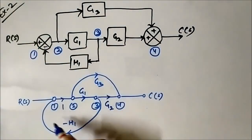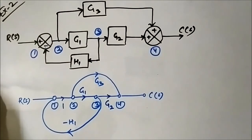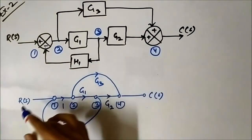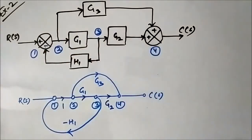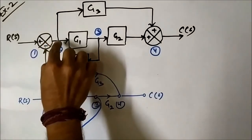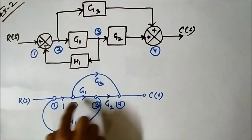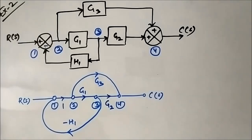This is the signal flow graph and this is the block diagram equivalent representation. Here we have discussed block diagram to signal flow graph conversion. I have deliberately taken this takeoff point immediately after the summing point, but taken them as separate nodes. I hope you liked this video — please subscribe to my channel Engineering Tutorial for more videos related to electrical, electronics, instrumentation, and communication engineering. Have a great day, thank you very much.